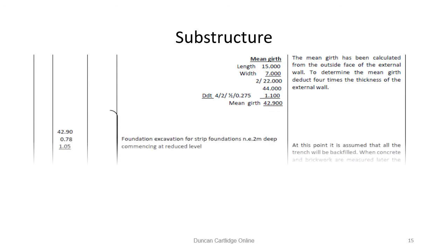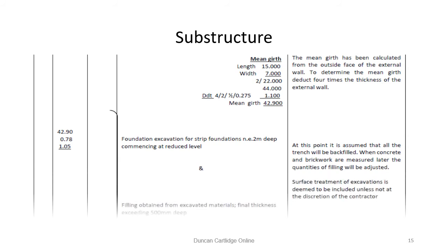Multiply by 2. And then deduct 4 times, twice times, half times the thickness of the wall. In this case, 275mm to give us 42.9. A more detailed explanation is included on the next two slides.